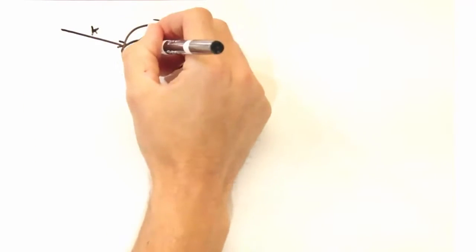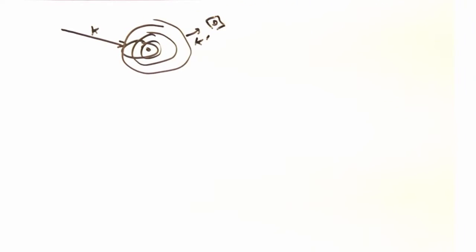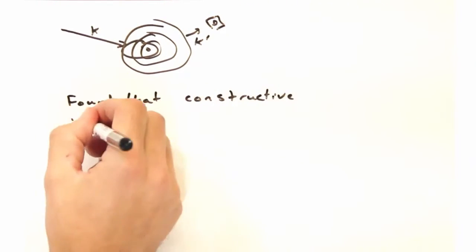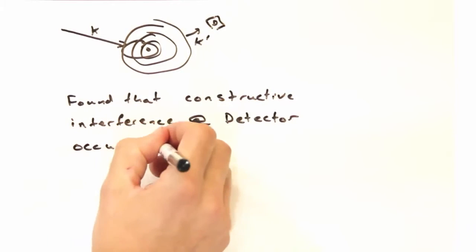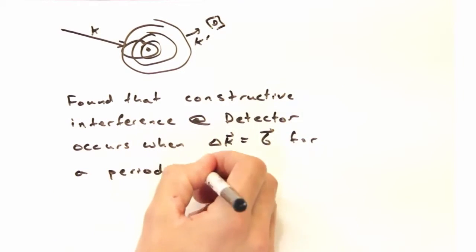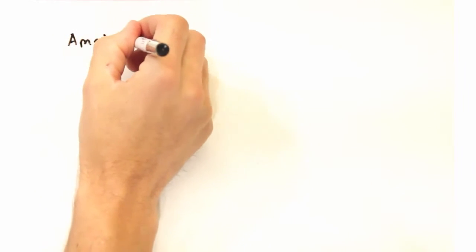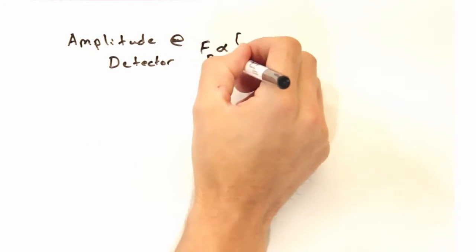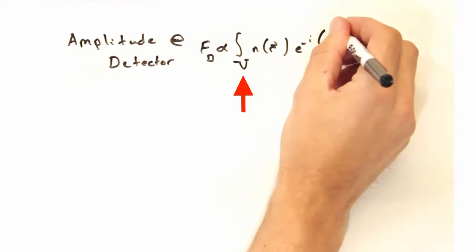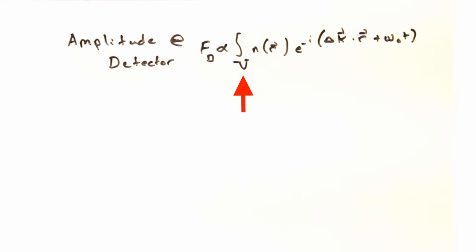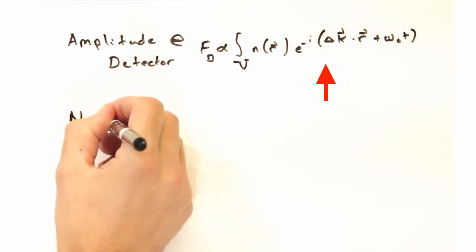Okay, going back to when we thought about elastic scattering, we had some incident wave vector k that, by the time it got to the sample, we approximated it as a plane wave. And we found that constructive interference at the detector was going to occur when delta k equals g for a periodic sample. In this case, the amplitude of the detector was given by an integral across the sample volume that was illuminated, the scattering density n, and this i to k dot r plus omega t term.